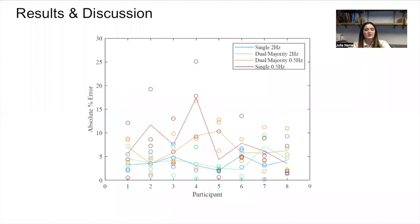The errors for each participant are shown here, with each condition shown in a different color. The condition average across all three trials is connected by the solid lines. It can be seen that the single 0.5 Hz condition errors in red were significantly higher than the single 2 Hz errors in blue and the dual majority 2 Hz errors in green.